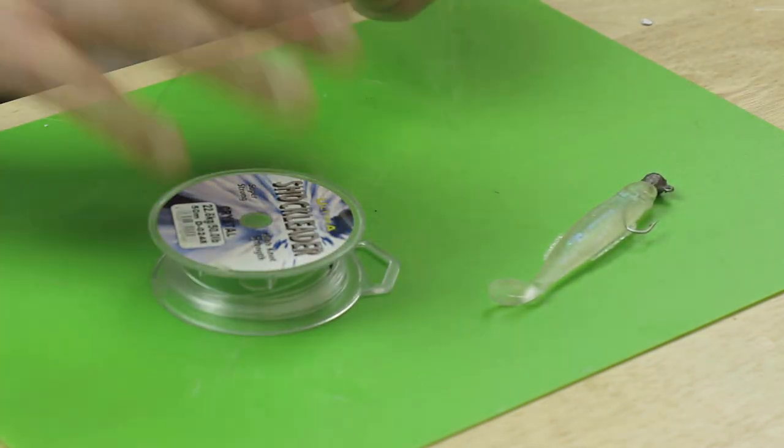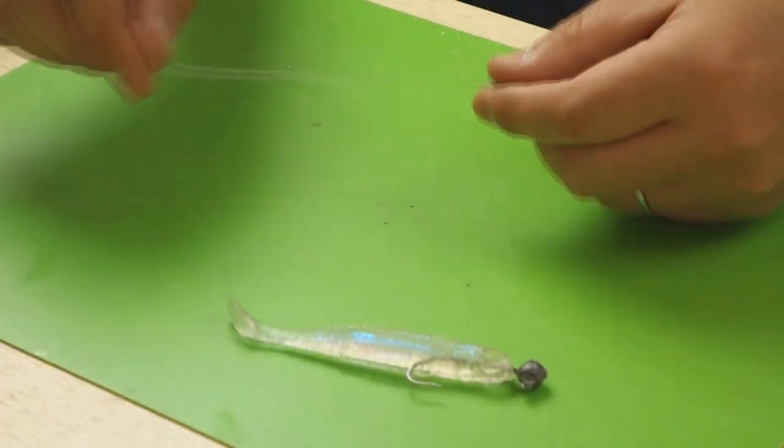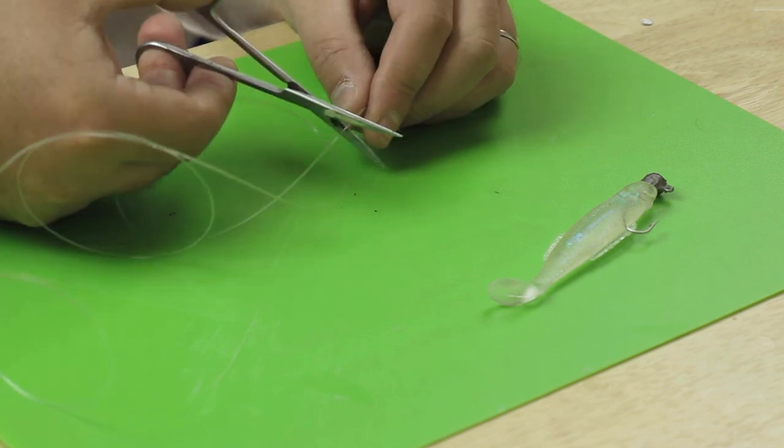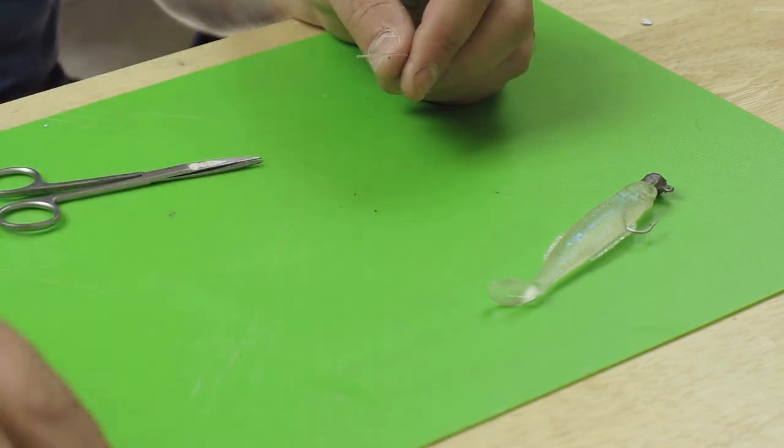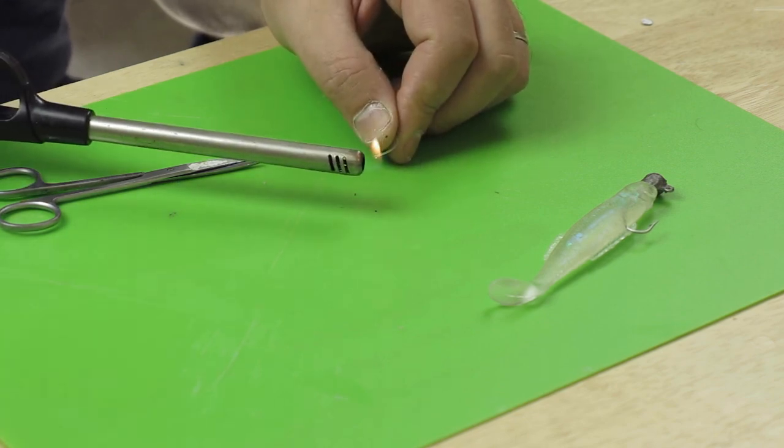I've got some 50 pound line here, this is monofilament. It's actually a shock leader but anything will do, it's just heavy. I'm going to cut off a couple of inches, 50mm, and then take a lighter and just melt the end.